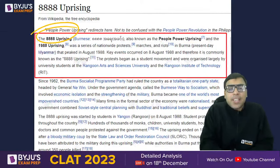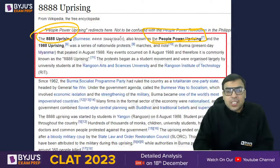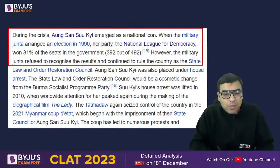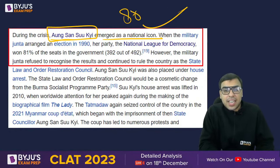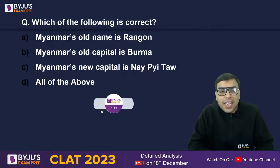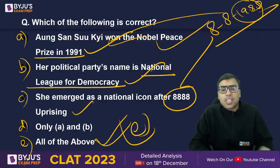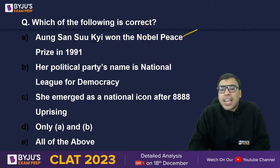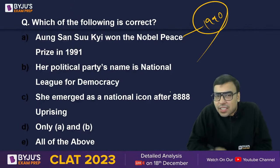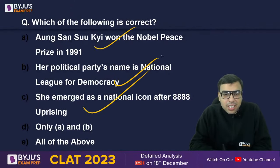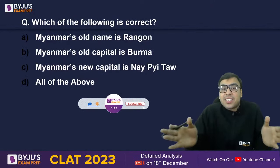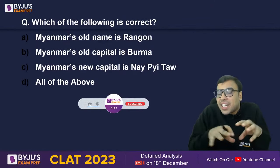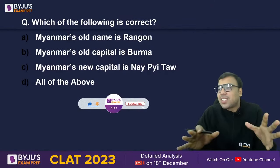This was the 888 Uprising — Aung San Suu Kyi emerged as a national icon because of this uprising. She won the Nobel Peace Prize in 1991. Since Myanmar is in the news, they can ask questions about its history. If you have CLAT's previous questions, you can prepare in detail from those also.